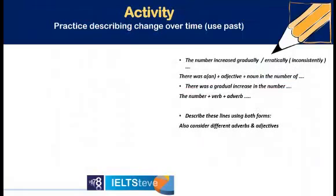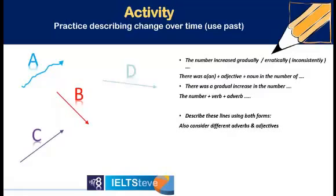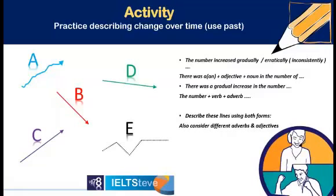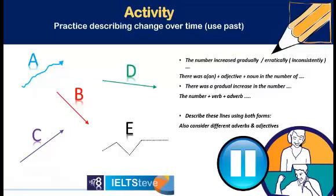In line graphs in particular, we're talking about change over time, and we'd like you to use the past tense. Remember, we only use this for time. Line graphs are almost always over time; bar charts, pie charts, and tables sometimes are as well. Have a look at these five lines as they come up. Pause now and talk to your partner — how would you describe them? You can do it verbally, write in the chat box, or however you're communicating with your study partner.